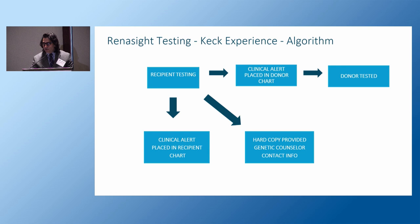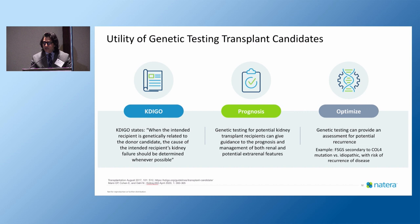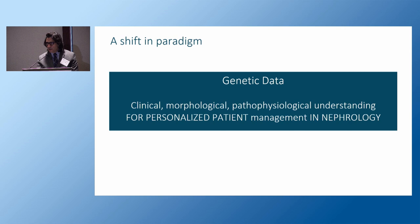A simple algorithm: we test the recipient, and if we have a donor, we put up a clinical alert in the donor chart so the donor can be tested — either with a full 385-gene panel or a targeted approach for specific genes. We provide a copy to them with backup from a genetic counselor in case they want to discuss results further. To summarize: genetic testing in nephrology and transplant is helping identify individuals at higher risk of CKD progression and post-transplant complications, identifying the etiology, and optimizing function. This is hopefully the beginning of a paradigm shift incorporating genetics into the clinical, morphological, and pathophysiological understanding, leading to more personalized patient management in nephrology and transplant.